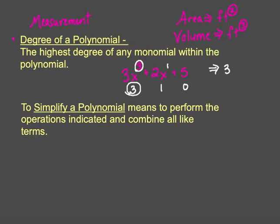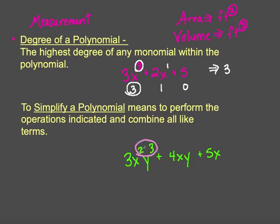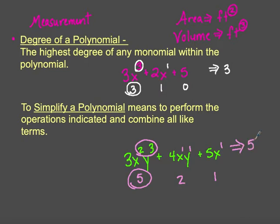Now if I have a polynomial with more than one variable, I simply add the sum of the exponents, just as if I were multiplying those together. So the degree of the first term would be five, the degree of the second term would be two, and the third term would be one. The degree of the entire polynomial is simply five.